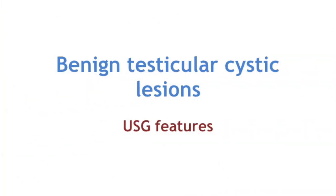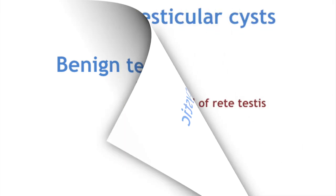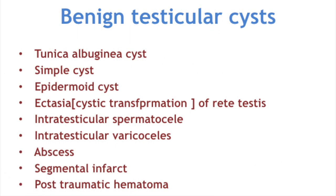Benign testicular cysts commonly seen are: tunica albuginea cyst, simple testicular cyst, epidermoid cyst, ectasia or cystic transformation of rete testis, intratesticular spermatoceles, intratesticular varicoceles, abscess, segmental infarcts, and post-traumatic hematomas.